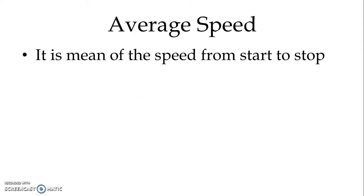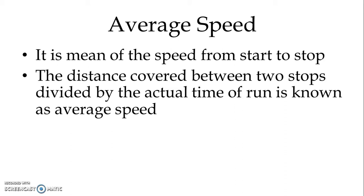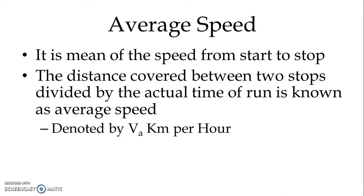Then, average speed. Average speed is the mean of the speed from start to stop. It can be defined as the distance covered between two stops divided by the actual time of run. It is denoted by V with the suffix A, i.e., V_A, and it is measured in kilometers per hour.